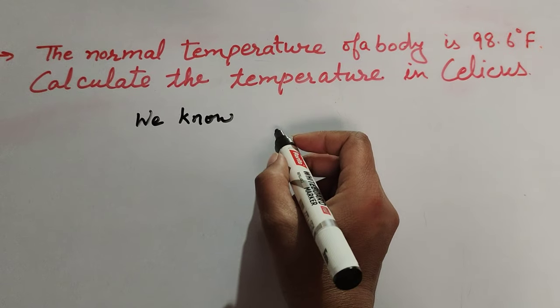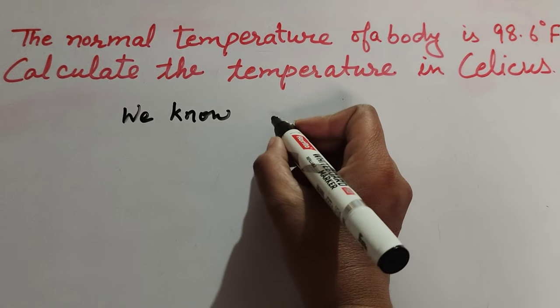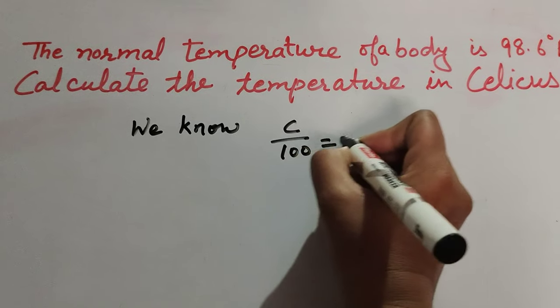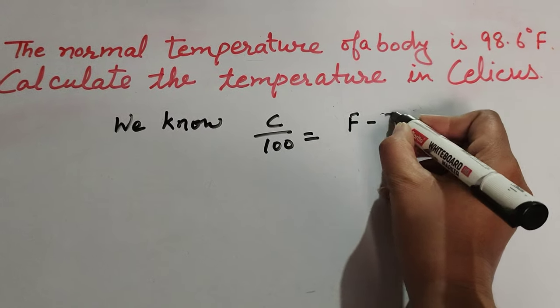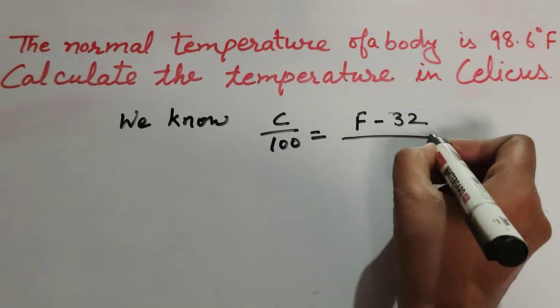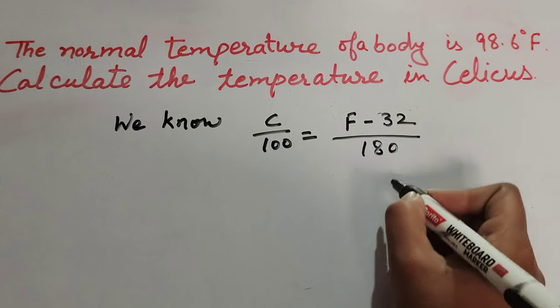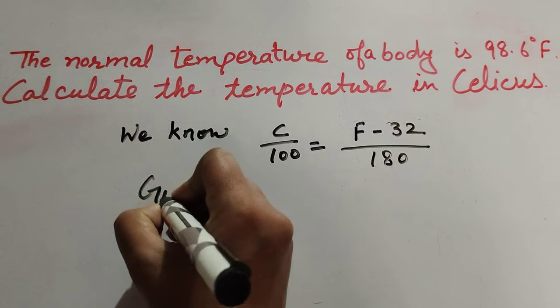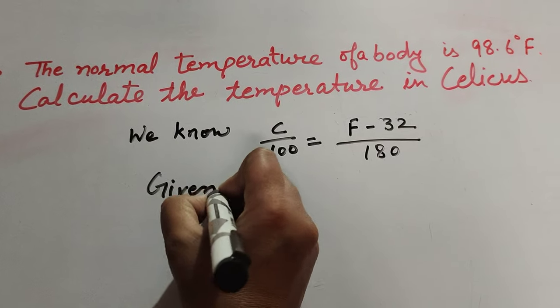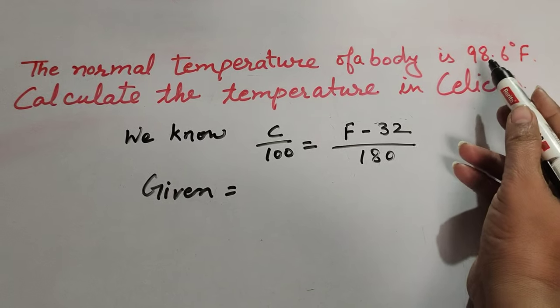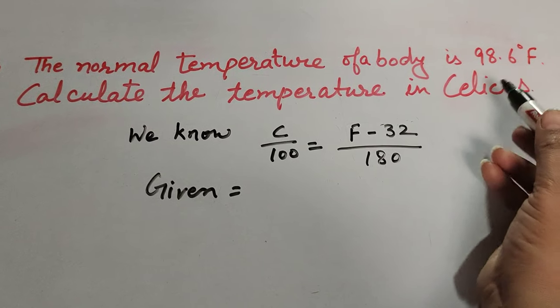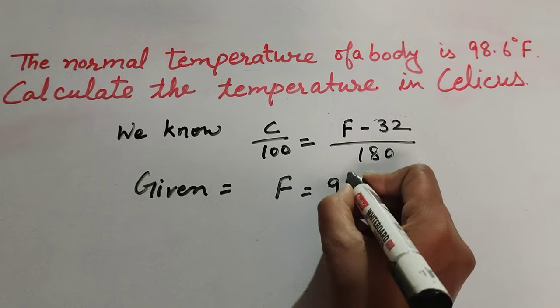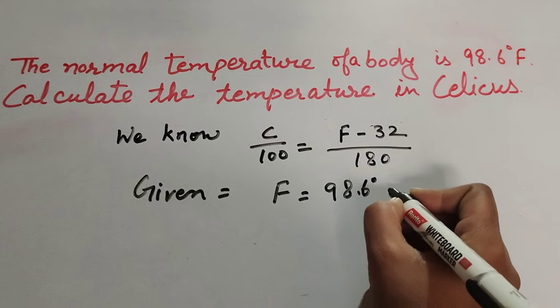We know C over 100 is equal to F minus 32 over 180, so we use this formula to find the temperature in Celsius scale. The given temperature of the body is F equals 98.6 degrees Fahrenheit.